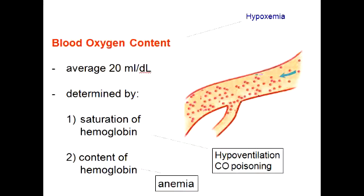What effects does decreasing hemoglobin have on oxygen? A decrease in the amount of hemoglobin leads to a decrease in the oxygen content of the arterial blood, but the saturation of oxygen and the arterial PO2 are not affected.